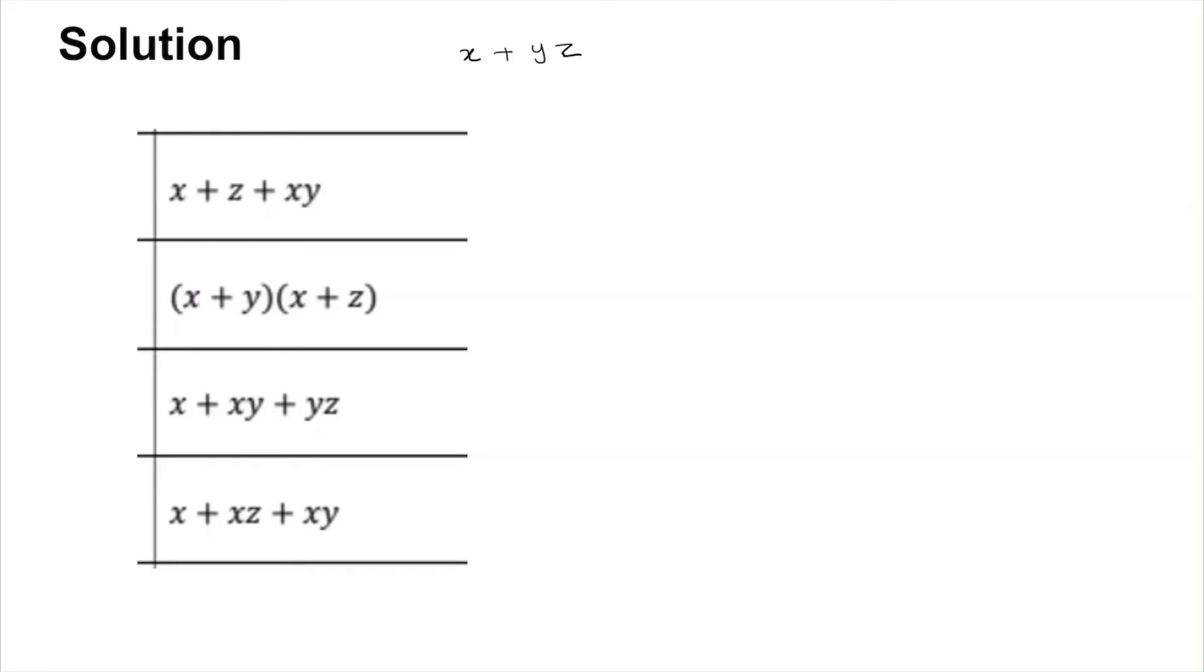So in the first one, you can take X common between X or XY because and distributes over or. And so this is now equal to X or Z, so clearly this is not correct.